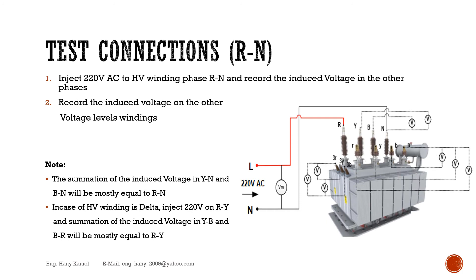Our example: transformer with vector group YN YN0. We will start with R phase testing with neutral.